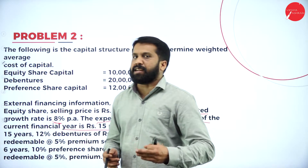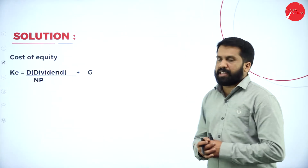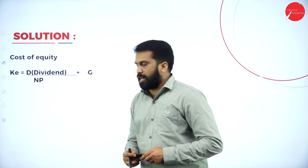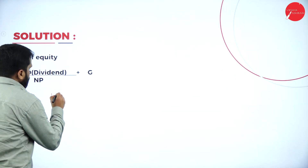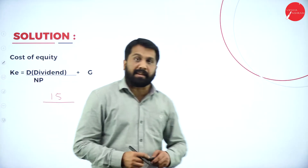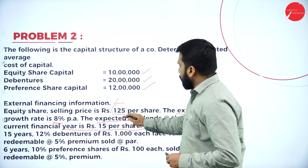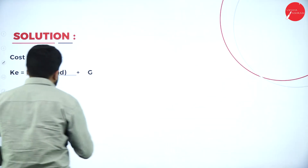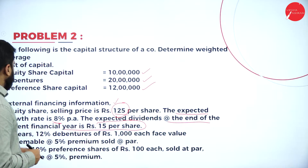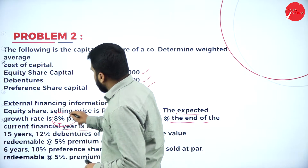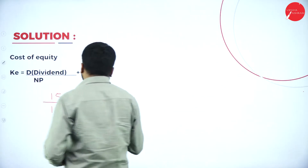We will finish up equity shares first, then come back for other topics. These are the formulas to calculate cost of equity shares. Your dividend as per this is 15 per share. This will be 15 divided by net proceeds. Net proceeds as per this is 125. So 125 plus the growth rate, which they have mentioned as 8%.